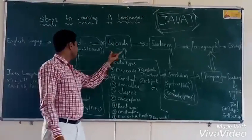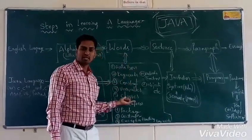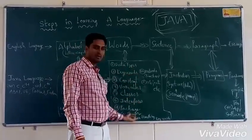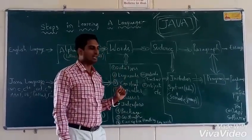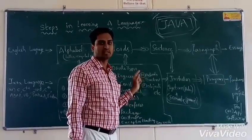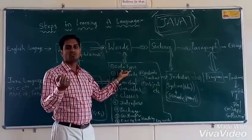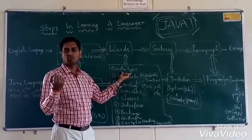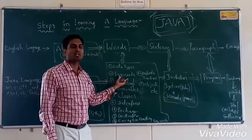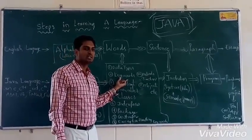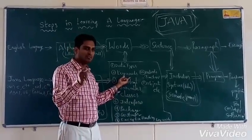That is about alphabets. Now, words: in English you frame words, but in Java language we have specific types of words — those are data types, like int, float, double, and so on. And keywords: in C language we have 32 keywords, whereas in Java language we have 50 keywords.